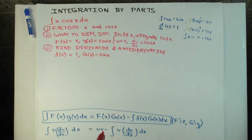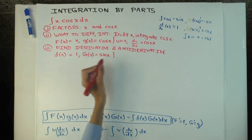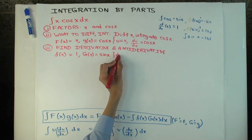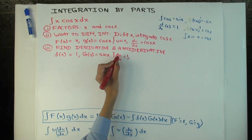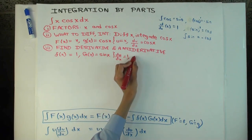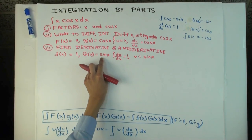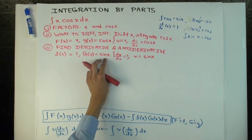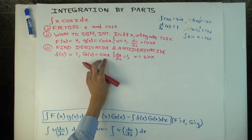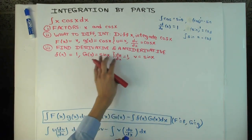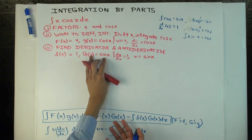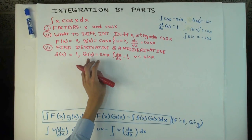A little aside: instead of sin x for the antiderivative, I could have picked 50 + sin x. Would that have been wrong? No. Would it have made any difference to the final answer? No. It doesn't matter which antiderivative you pick — just pick any one. I pick sin x because it's the simplest choice; I could have picked 50 + sin x with 50 being a constant.